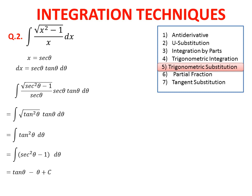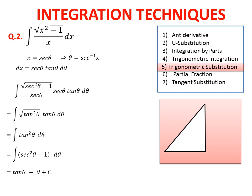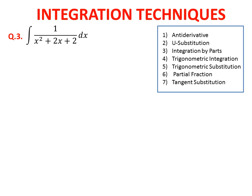Whenever we have tangent squared θ, we plug in sec²θ minus 1 to eliminate the integral. The anti-derivative of sec²θ is tangent θ. The answer is now in terms of θ, so we need to back-substitute. From the substitution, θ = sec⁻¹(x). Using a right triangle where angle is θ and sec θ = x (hypotenuse over base), by the Pythagorean theorem the vertical length gives tan θ = √(x²−1)/1. So the answer is √(x²−1) + sec⁻¹(x) + C.